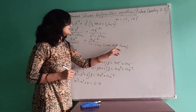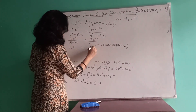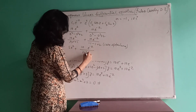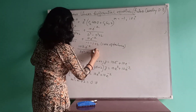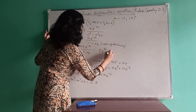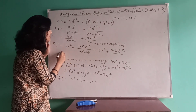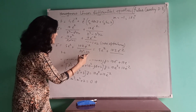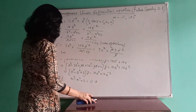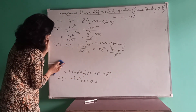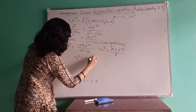Since the denominator is 0 — a case of failure — we differentiate the denominator with respect to D, giving 3D² minus 2D, and multiply Z once in the numerator. Replacing D by minus 1 in 3D² minus 2D: 3(1) minus 2(minus 1) equals 3 plus 2 equals 5. So the second part is 10Z e^(minus z) / 5 equals 2Z e^(minus z). Therefore PI equals 5e^z plus 2Z e^(minus z).